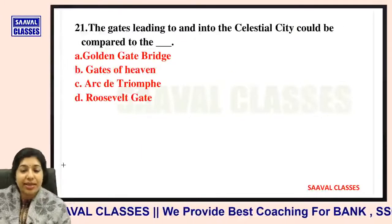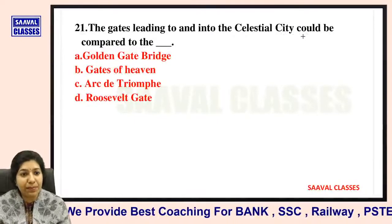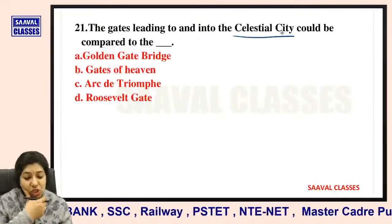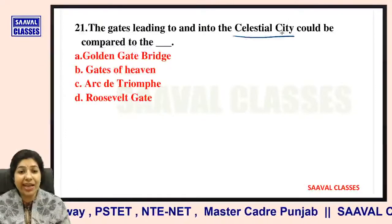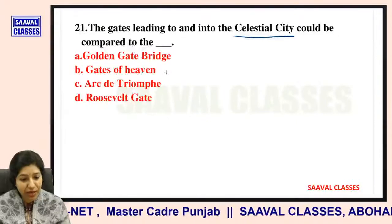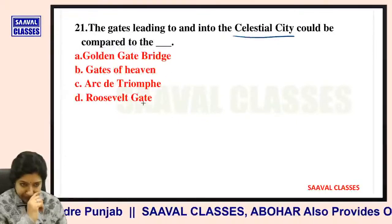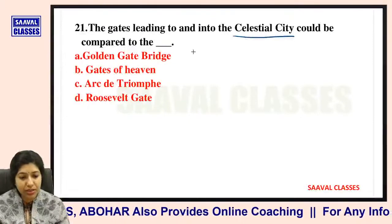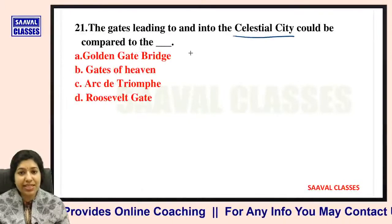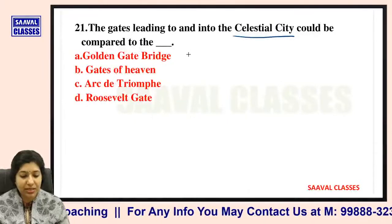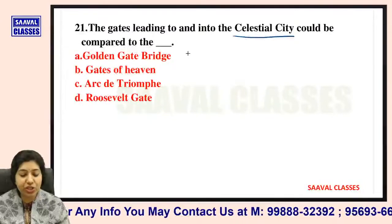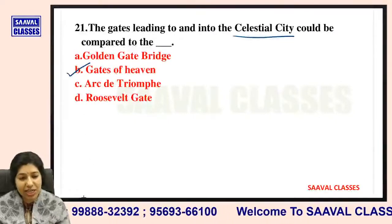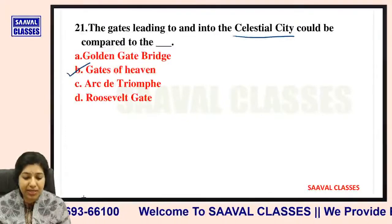Question number twenty-one: The gates leading to and into the celestial city could be compared to what? The Golden Gate Bridge, the Gates of Heaven, the Arc de Triomphe, or Roosevelt Gate? The gates leading to the celestial city, which Christian crossed, could be compared to the Gates of Heaven.